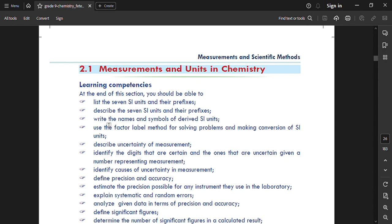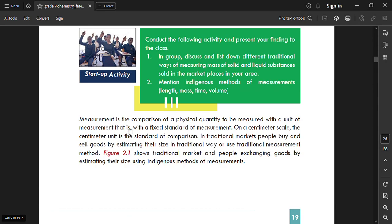The first topic is measurement and the unit is in chemistry. Measurement means it is a physical quantity or it is the comparison of physical quantity. That means it is to measure the units of measurements. Measurement is a physical quantity to be measured as a unit of measurement, that is the fixed standard measurement.